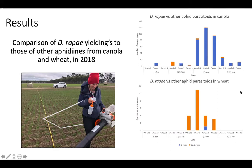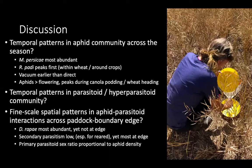Due to the high proportion of Diaeretiella rapae reared, I split the data to compare this wasp against all others and looked at how composition changed over time in canola and wheat. Diaeretiella rapae really predominates in canola, peaking in early November, but in wheat this is not the case — other species predominate and move in at higher numbers slightly earlier. Here's a quick picture of myself showing how much equipment I had to take out each time — rather a lot of hard work.